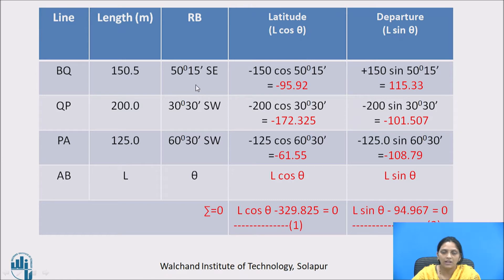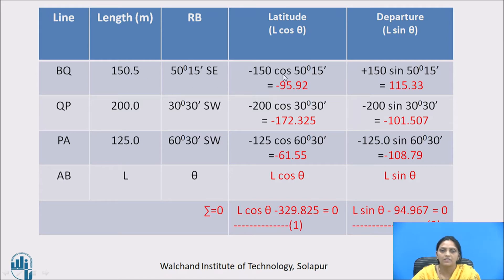Now we will determine the latitude and the departure. As we know, latitude is L cos theta and departure is L sin theta. We will enter all the given data in this table. For latitude and departure there is a sign convention. When the line is in north-east quadrant, latitude and departure both are positive. For line BQ, latitude is minus L cos theta and departure is plus L sin theta. Theta is the bearing and L is the length of the line.